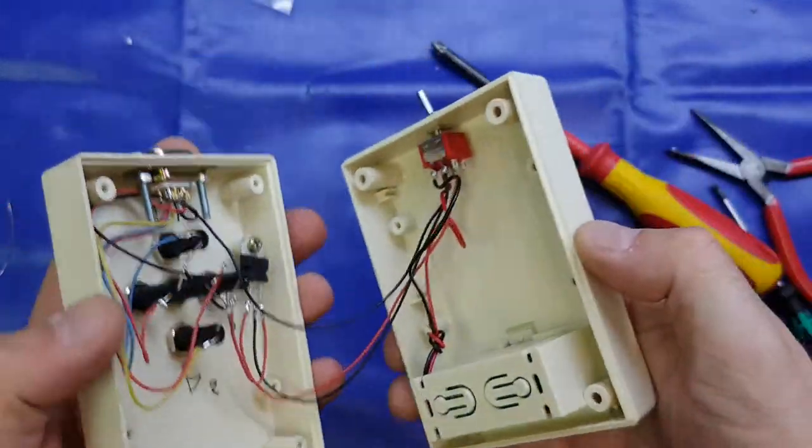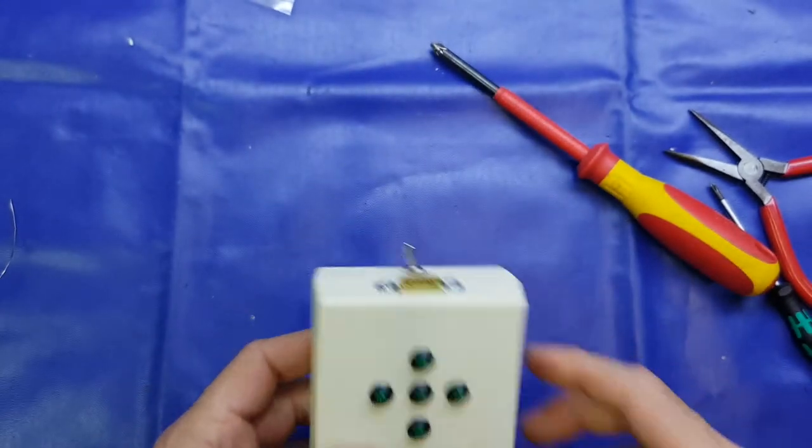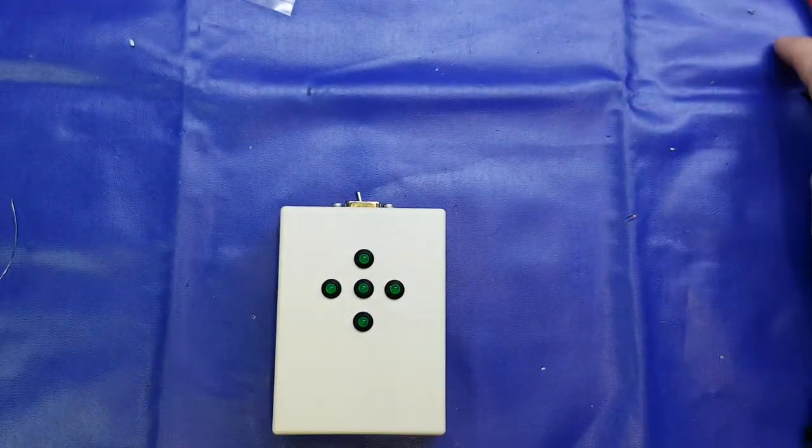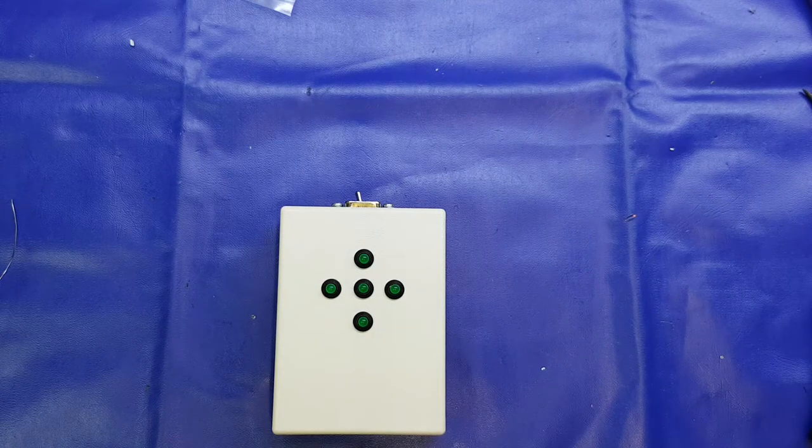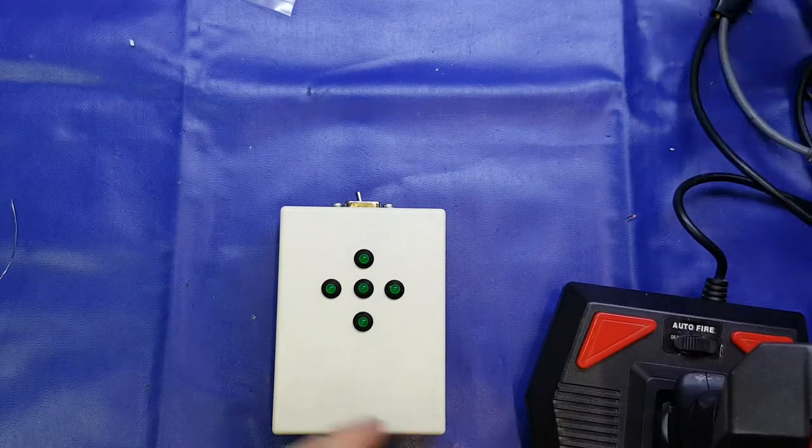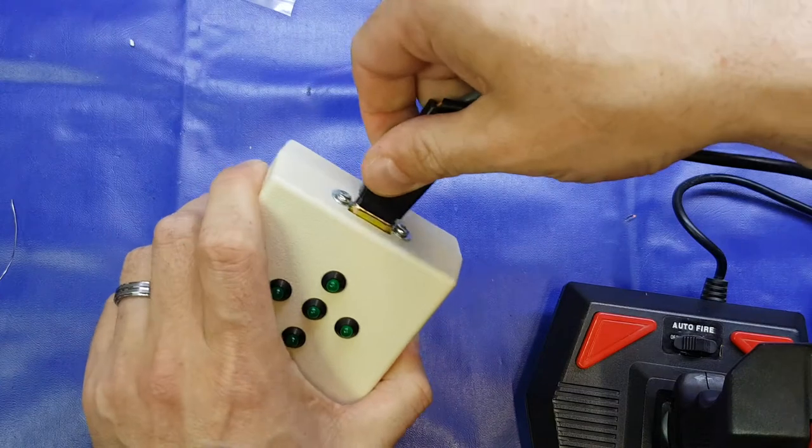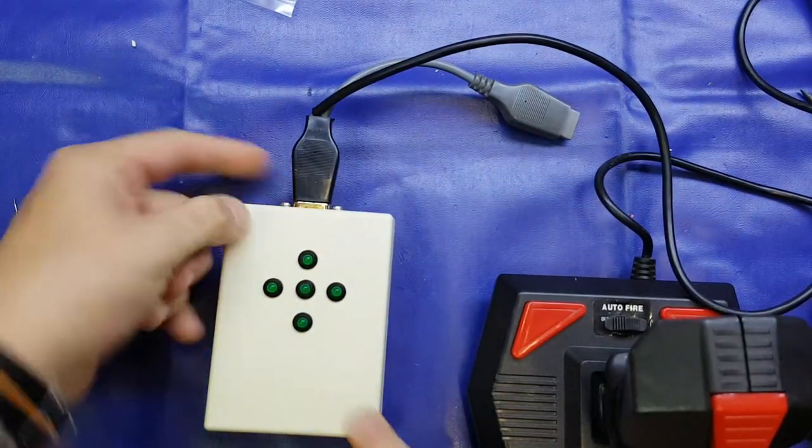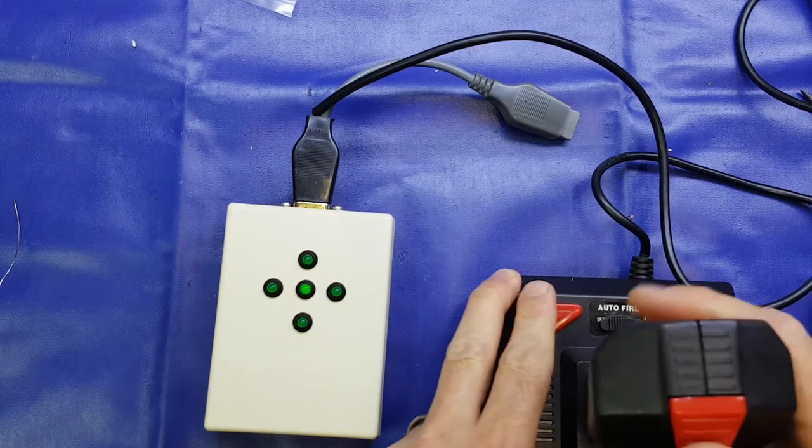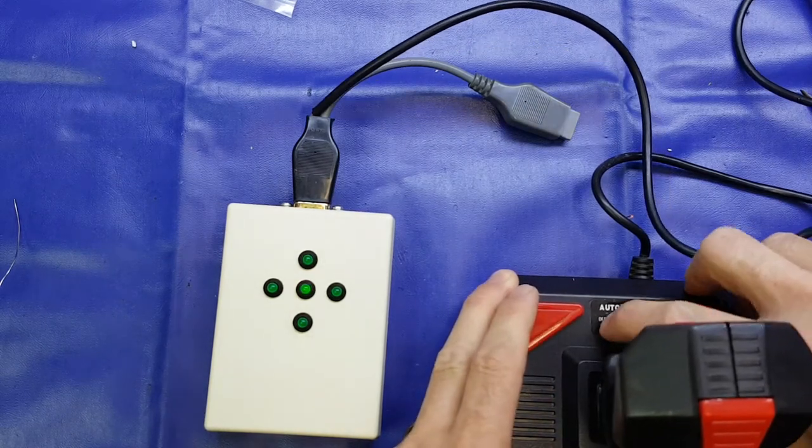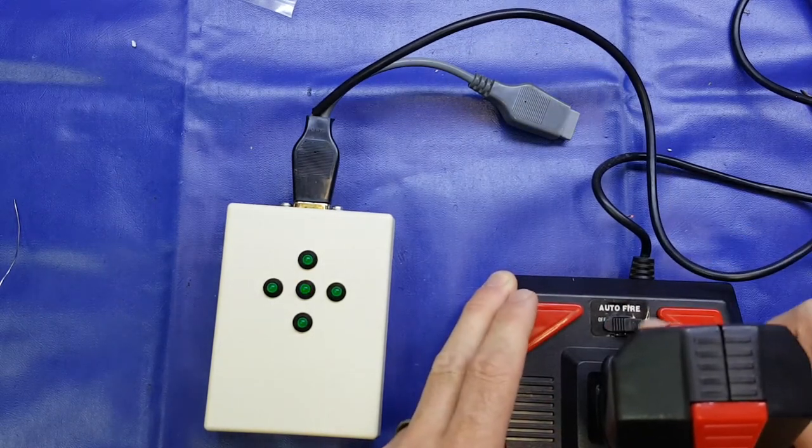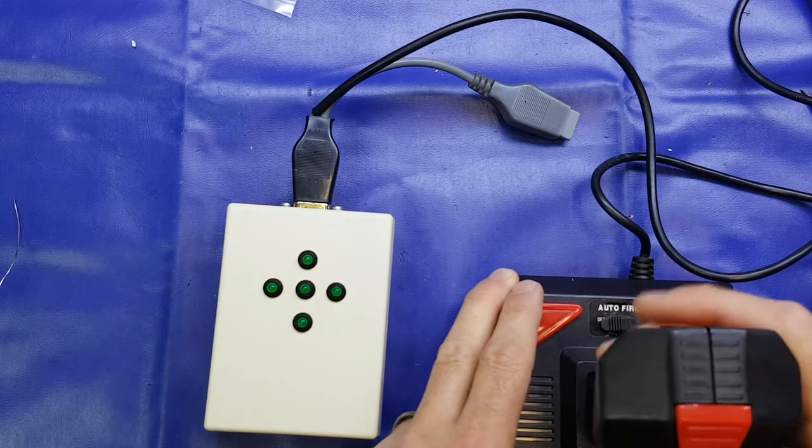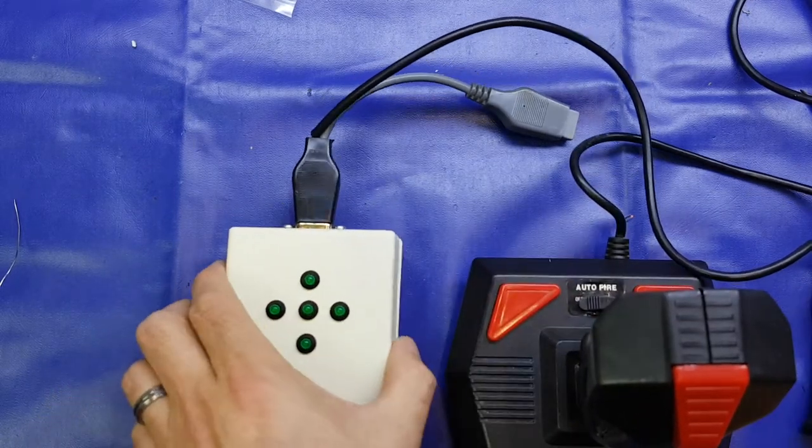Fairly straightforward. We'll pop that back together. I'm not going to screw the enclosure together. Do that afterwards just to keep the time of the video down. So we'll plug this in. As you can see, it doesn't work. We'll turn it on. And check the autofire function. And there we go. Working perfectly. No dramas at all.